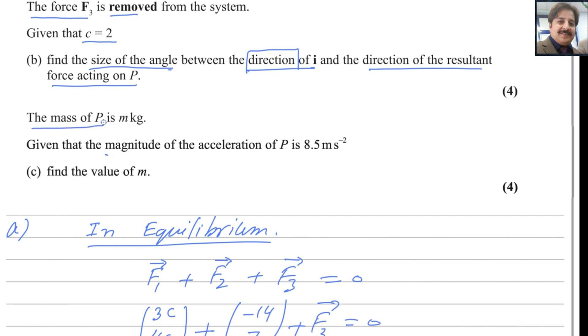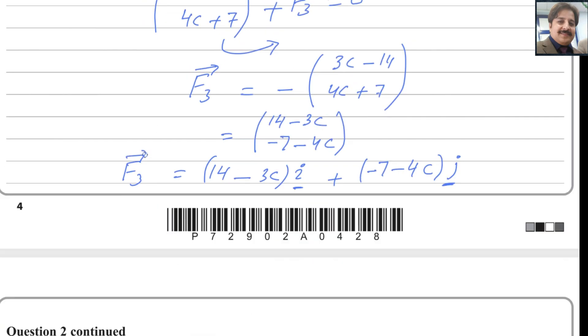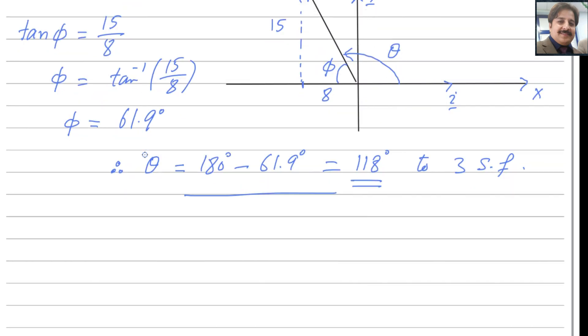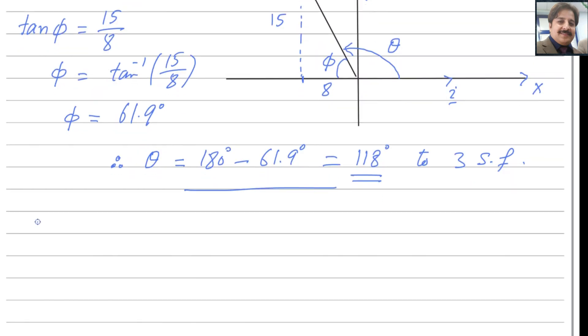The mass of P is m kilogram. Given that the magnitude of the acceleration of P is 8.5 meter per second square, find the value of m. We know that this resultant force will produce the acceleration. For that, you should know the magnitude of the resultant force.